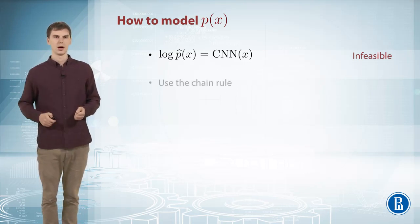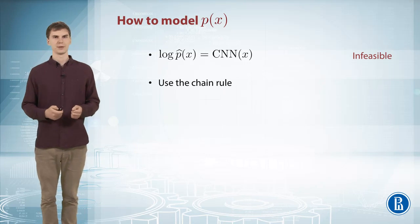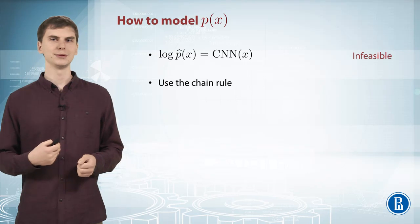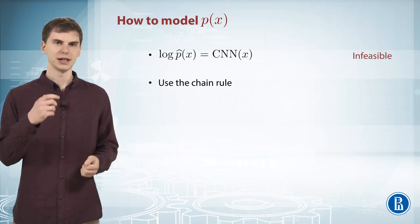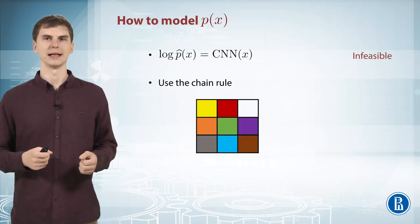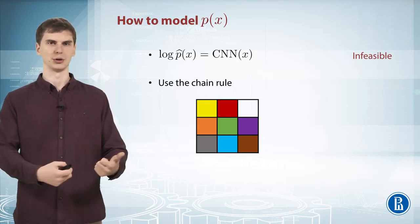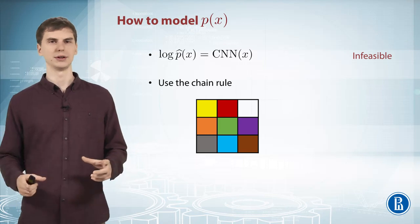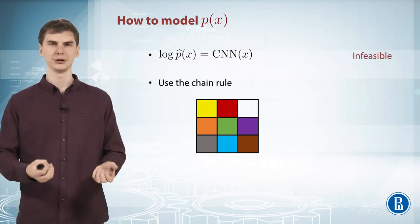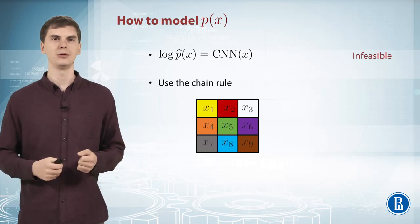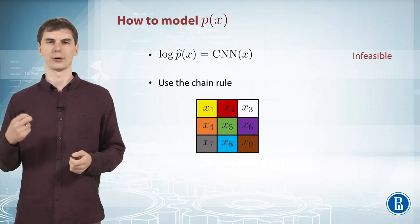So what else can you do? You can use the chain rule. If you recall from week one, any probabilistic distribution can be decomposed into a product of conditional distributions. We can apply it to natural images. Say we have an image, in this case a 3x3 pixel image, but in practice you'd use like 100x100 or even higher resolution. You can enumerate each pixel somehow, for example row by row fashion.